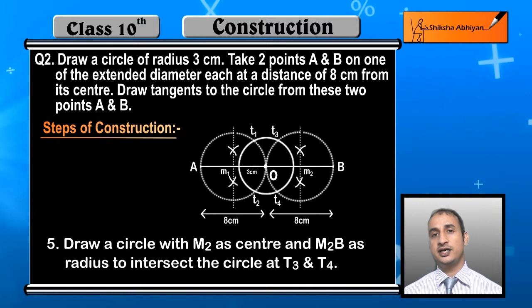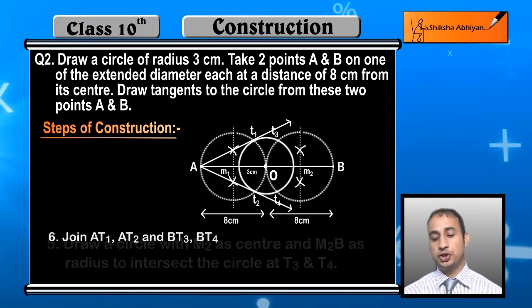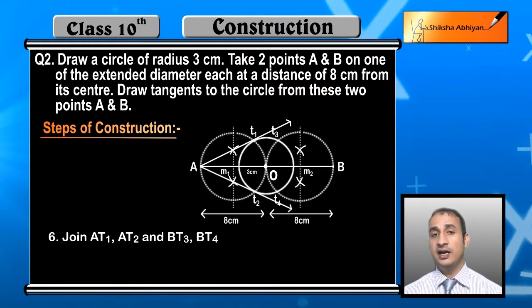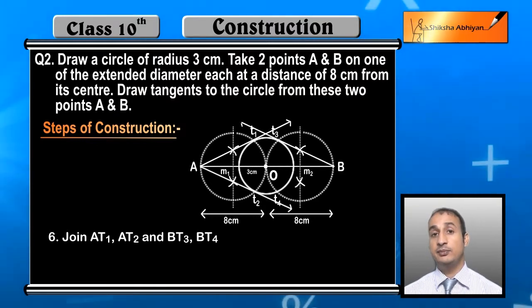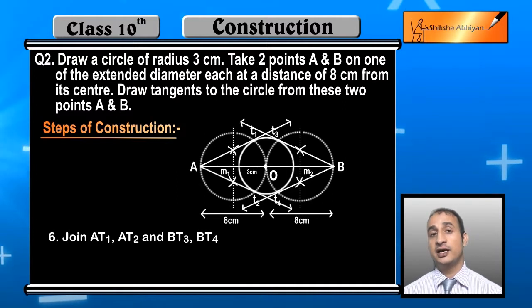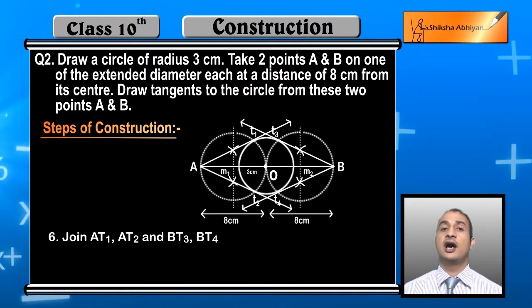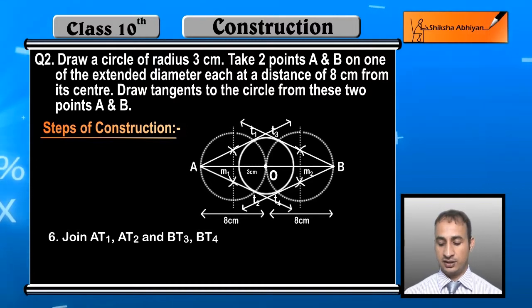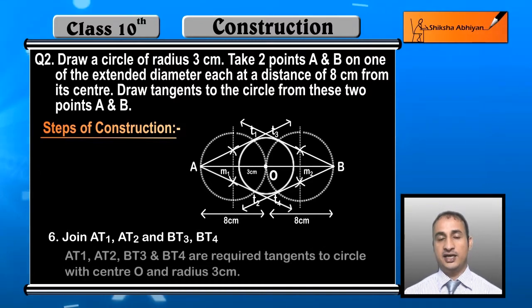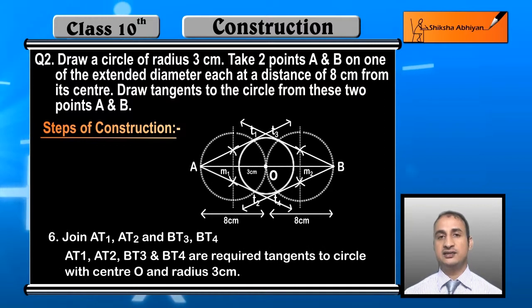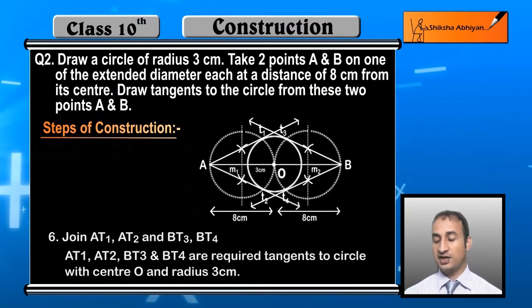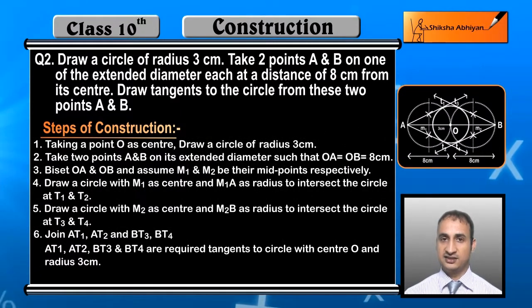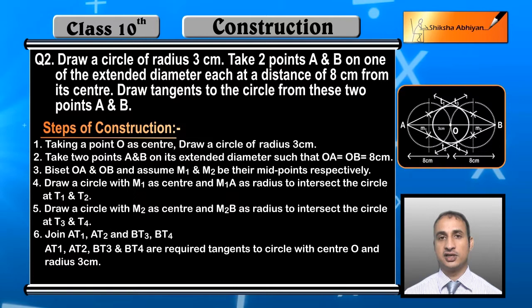Now join A to T1 and A to T2. Similarly join B to T3 and B to T4. After joining these points, we get our required tangents: AT1, AT2, BT3, and BT4 are the required tangents to the circle with center O and radius 3 centimeters. This completes the construction.